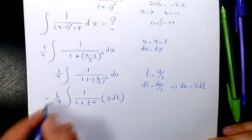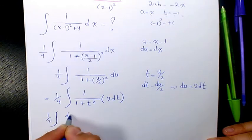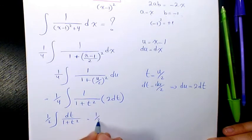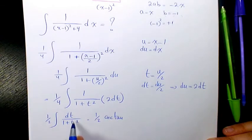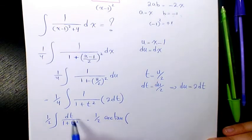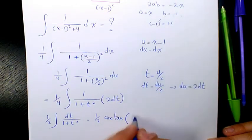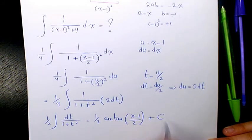So taking the 2 out, it's 2 over 4 or 1 over 2, dt over 1 plus t squared. When you find the integration, it's 1 over 2 arctan t, which is u divided by 2, and u is x minus 1. So it's x minus 1 divided by 2 plus a constant.